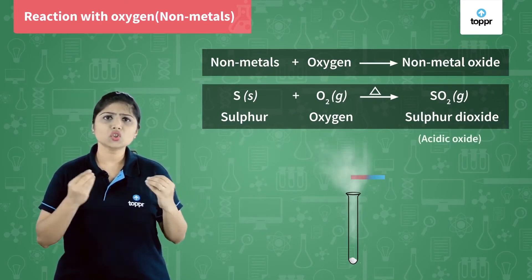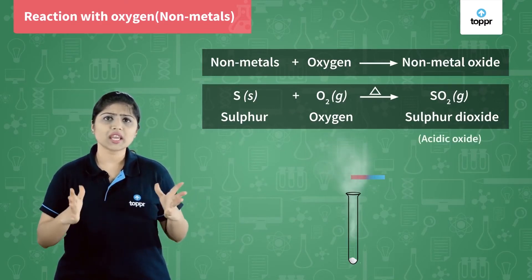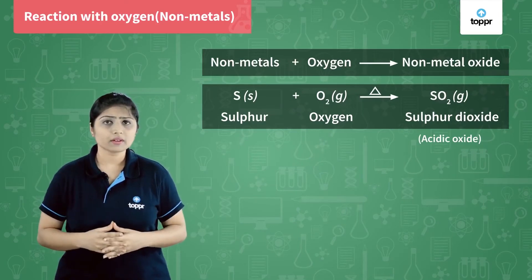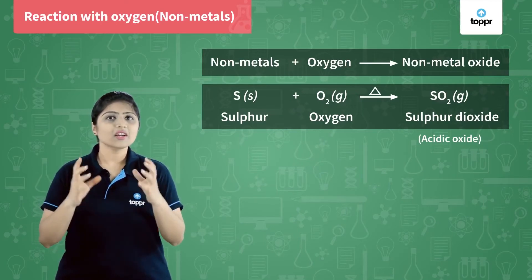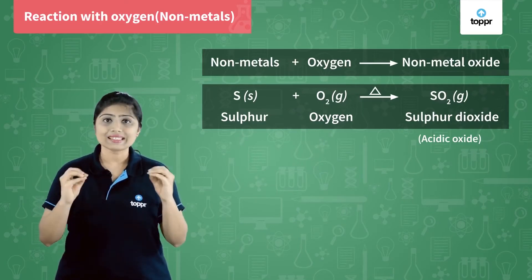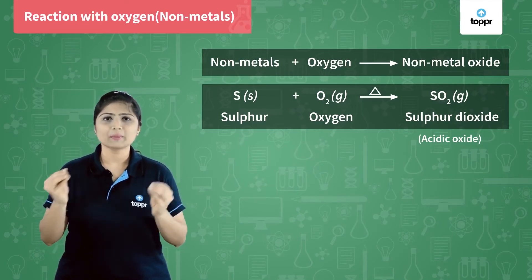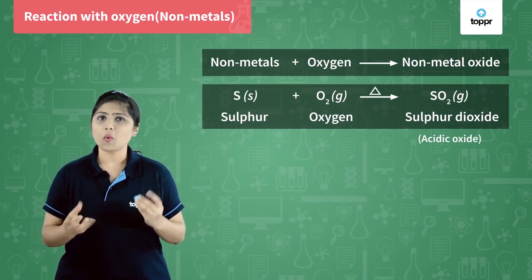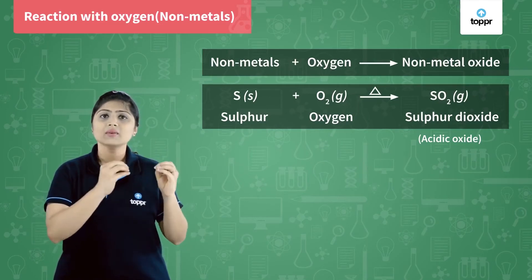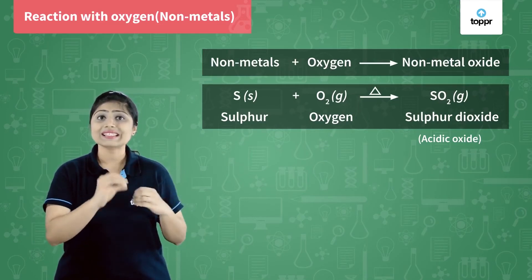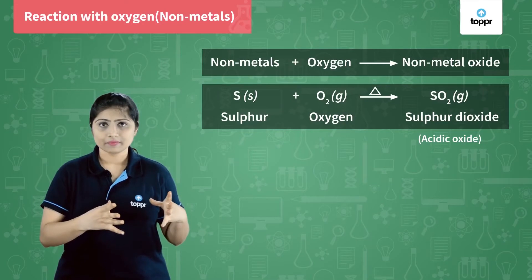But why didn't it show any change on the dry litmus paper? Recall, acidic properties are seen only in the presence of water. So this indicates that sulfur dioxide is acidic.